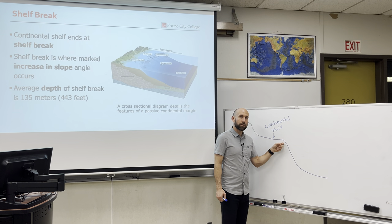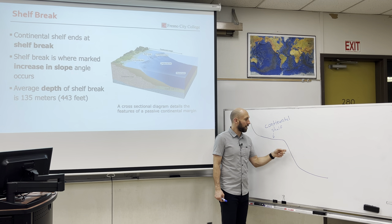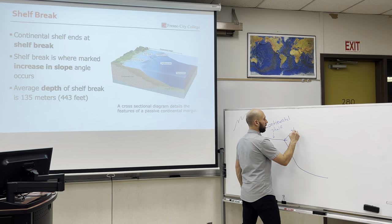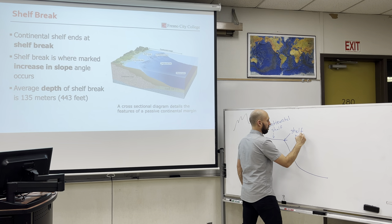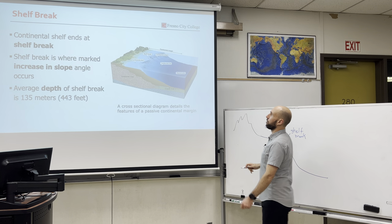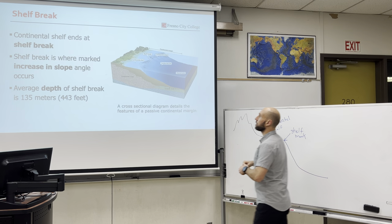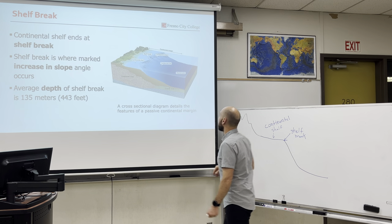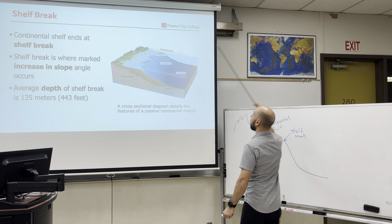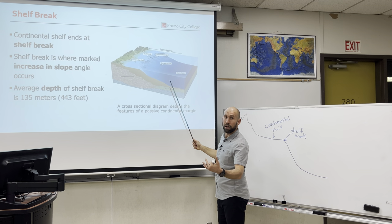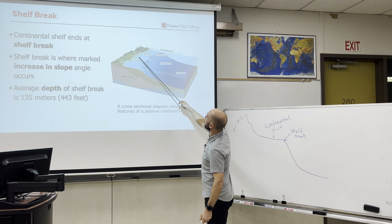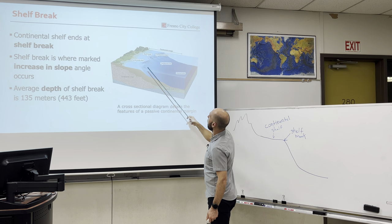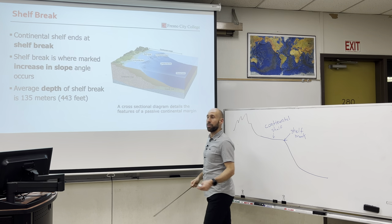There's a distinct break in slope — the transition between the continental shelf and the continental slope — called the shelf break. The shelf break is where the slope angle increases. The average depth of the shelf break is about 135 meters, though that is extremely variable. Here we can see on a cross-section of passive continental margins: the continental shelf, the shelf break as a distinct line, and then below that the continental slope.